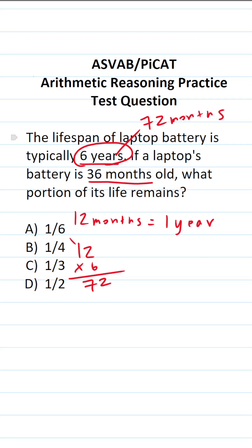All right, so the battery is 36 months old. We want to know what portion of its life remains. So we're going to do 72 minus 36 to find out how many months of life it has left.